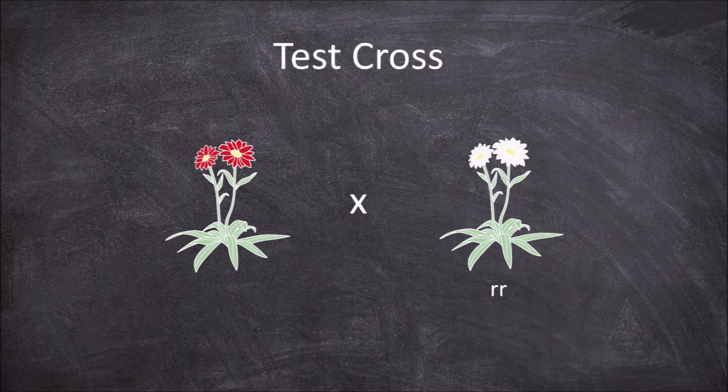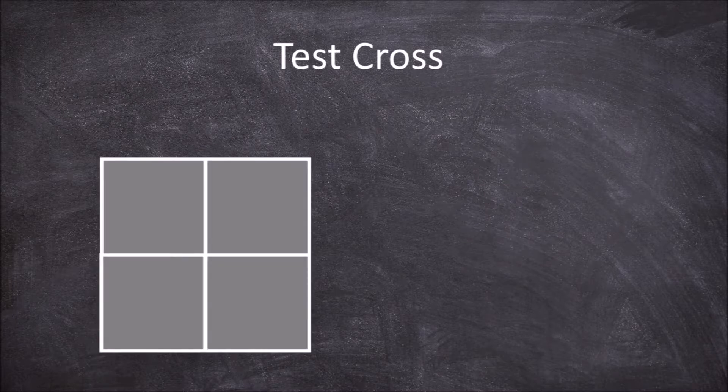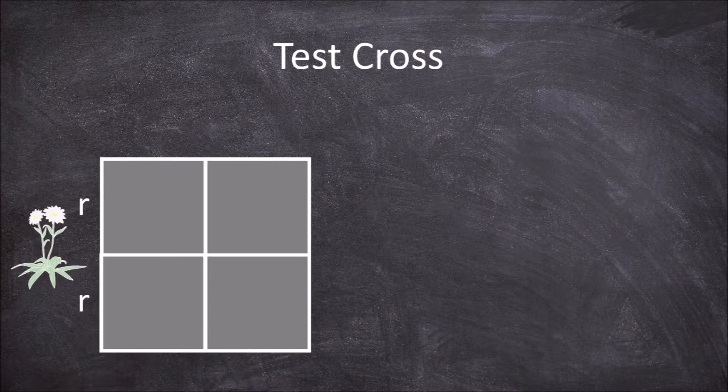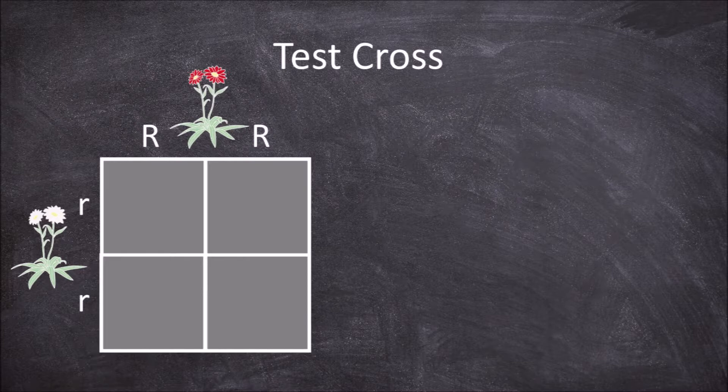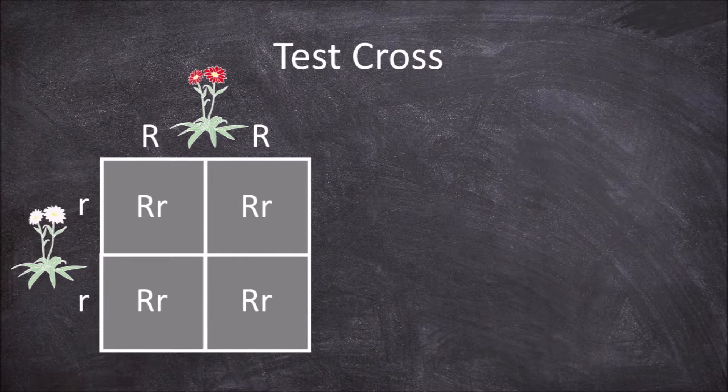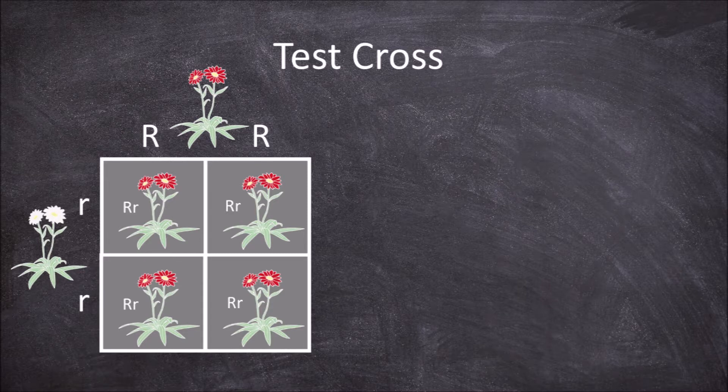This is when we can utilise a Punnett square. If the parent being crossed with the homozygous recessive individual is the homozygous dominant plant, then by using a Punnett square we can see that any offspring from this cross would all be heterozygous and all express as having red flowers.